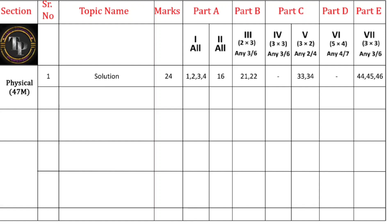Talking about Electrochemistry — this is the second physical chemistry chapter. Electrochemistry has a weightage of 23 marks: three MCQs, one fill in the blanks, two two-mark questions, two three-mark questions, and three numerical problems. This is almost equal to Solution — only one MCQ less. If you study either Solution or Electrochemistry, you can answer all the questions because choice questions are available.